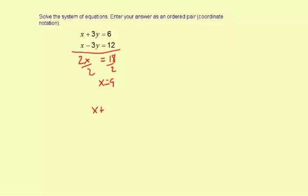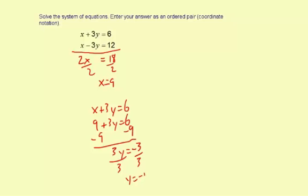So it's x plus 3y equals 6. I'm going to substitute the 9 for x, plus 3y equals 6. Subtract 9 from both sides. 3y equals negative 3. Divide by 3 on both sides. y equals negative 1.